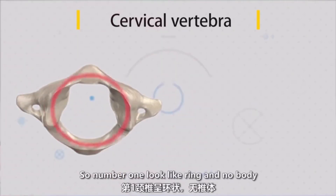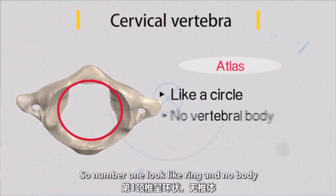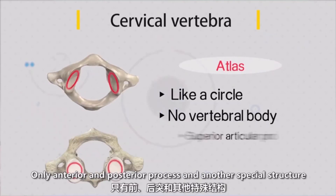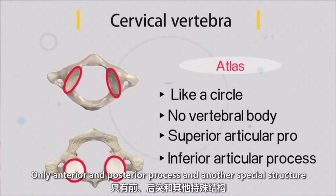So number one — the atlas — looks like a ring. There is no body. We have anterior and posterior processes.